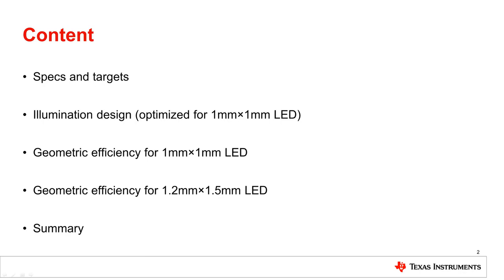The geometrical efficiency is evaluated for two popular LED sizes. The 1 mm by 1 mm LED is for high efficiency, while the 1.2 mm by 1.5 mm LED can enable high brightness.